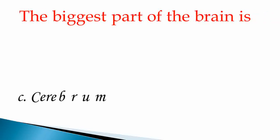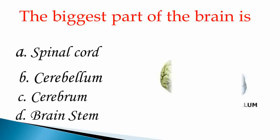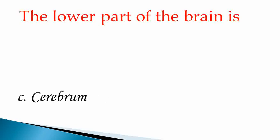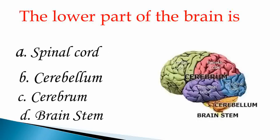The biggest part of the brain is option A: Spinal cord, option B: Cerebellum, option C: Cerebrum, and option D: Brainstem. The lower part of the brain is option A: Spinal cord, B: Cerebellum, C: Cerebrum, and D: Brainstem. Answer is D, Brainstem.